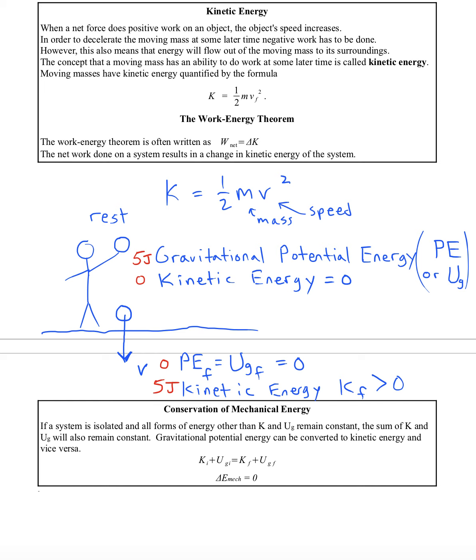What it implies is that gravitational potential energy can be converted to kinetic, and kinetic can be converted to gravitational. But what we will see is that there won't be any net gain or loss of energy. Energy is conserved.